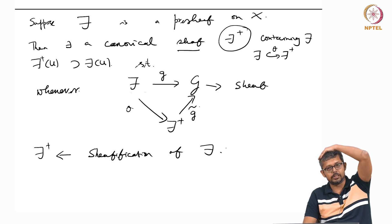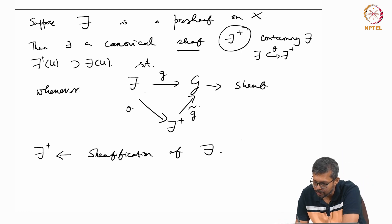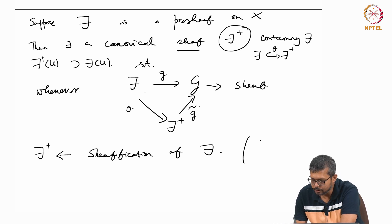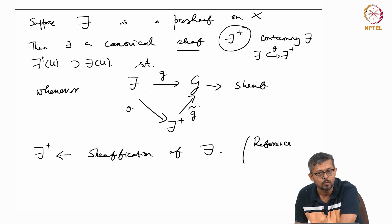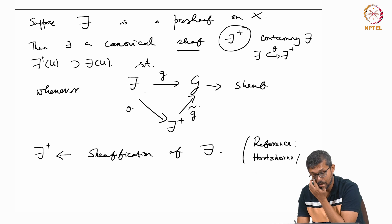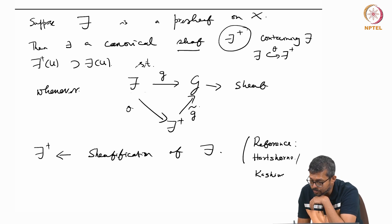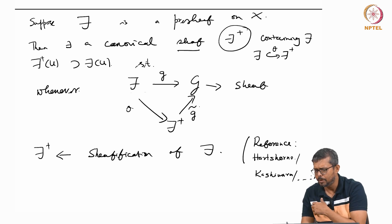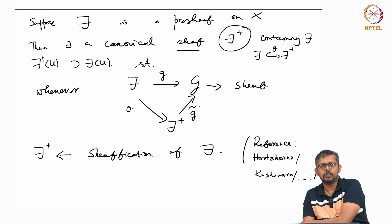The point is, why should it exist? You can construct the sheaf f⁺ from f. I am not going into the detail of this — you can look at any book on sheaf theory for sheafification. References include Hartshorne, Kashiwara's sheaves on manifolds, or many books on homological algebra or sheaf theory — you can find the sheafification of a pre-sheaf there.